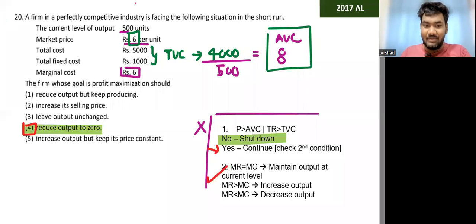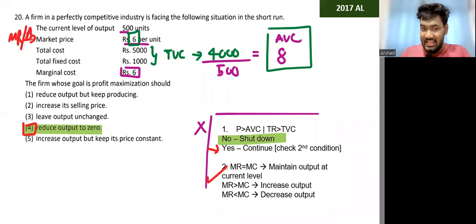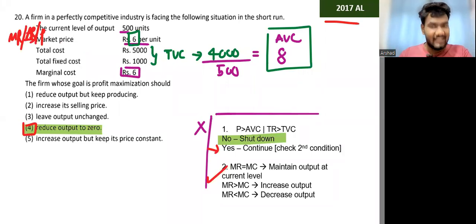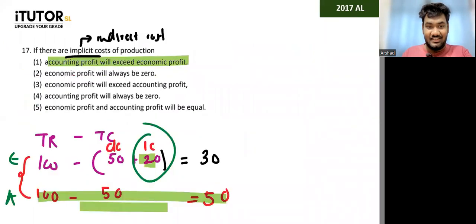MR equals AR equals price — that's how you find marginal revenue here. That was from the 2017 paper. If you got five out of five, congratulations — you are a level better than what I was during A-levels. We'll now move to 2018.